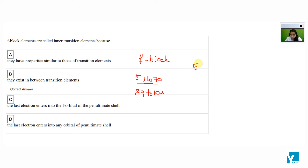Elements 55 and 56 are our s-block elements. Right after that, 57 to 70 — this is our group.